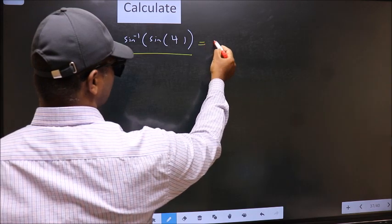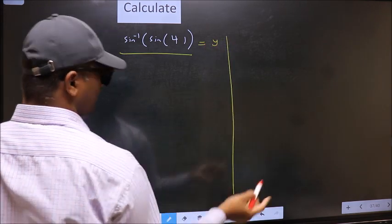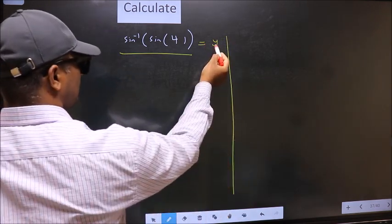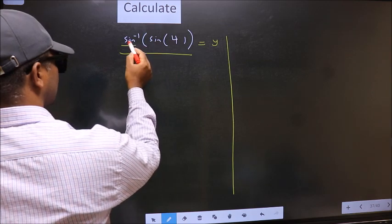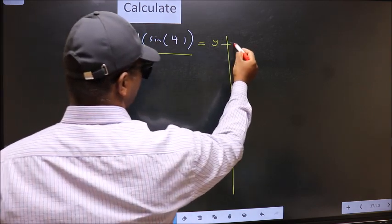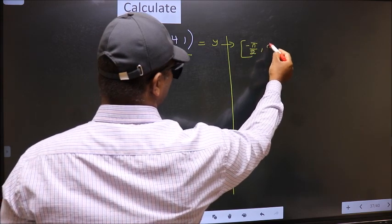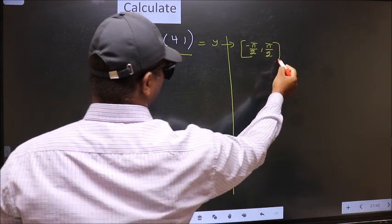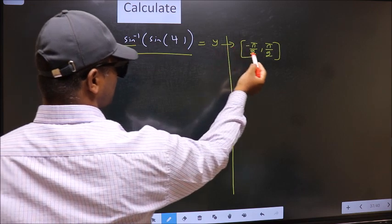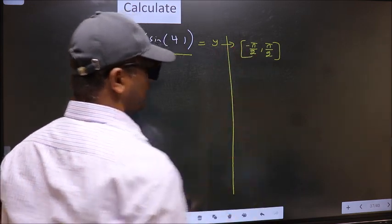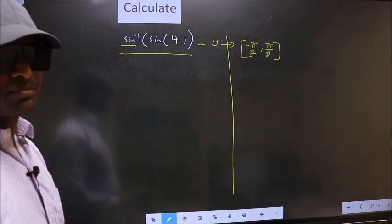Let us take the answer to be y. And the condition is y should lie in the range of sin inverse which is minus pi by 2 to plus pi by 2. Our answer should lie in this interval.